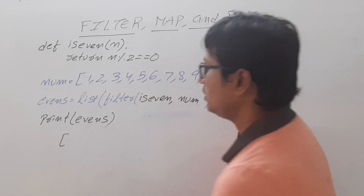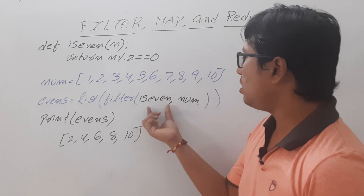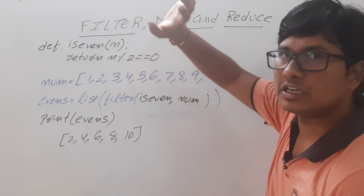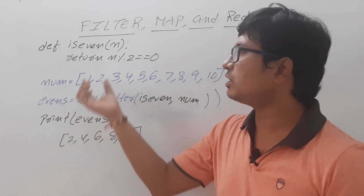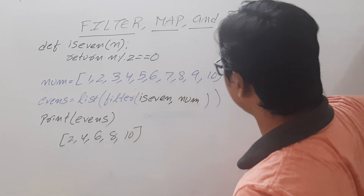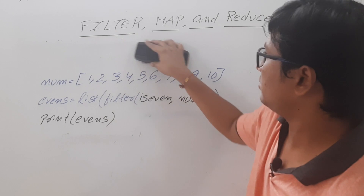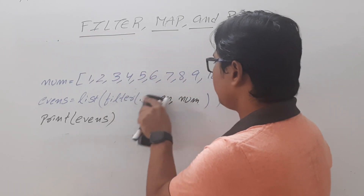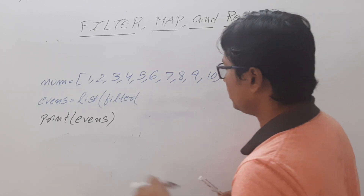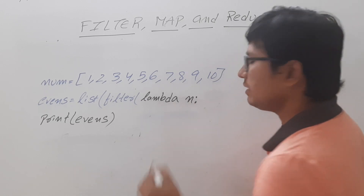The events list will consist of all even numbers from the given list called num. So to do that, for executing a single statement you are defining an entire function. Instead of that, we can use lambda functions. How can we use lambda functions in place of the iseven user-defined function? Let me erase this. Instead of this user-defined function, we define a lambda function — a single-line anonymous function that has an argument and an expression.